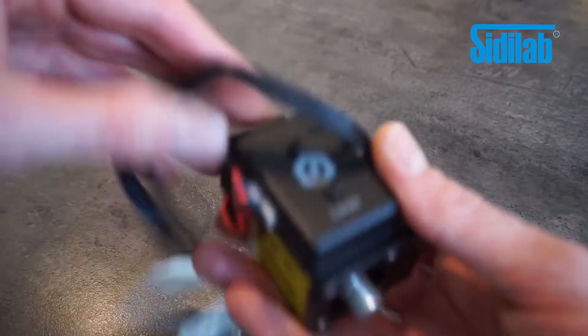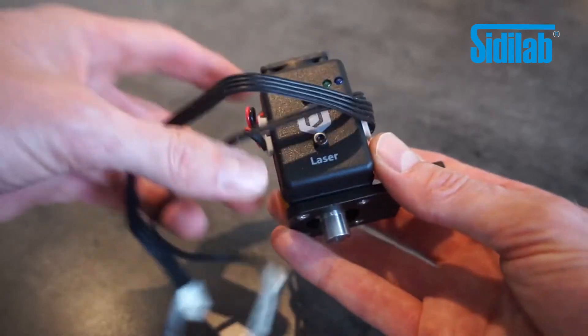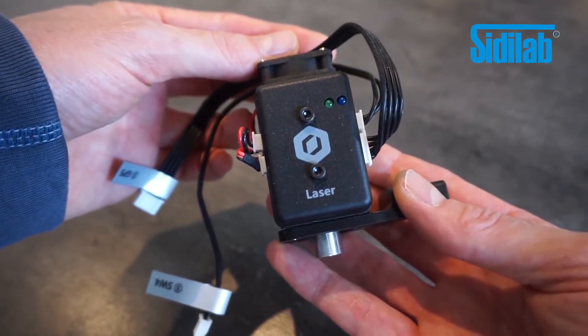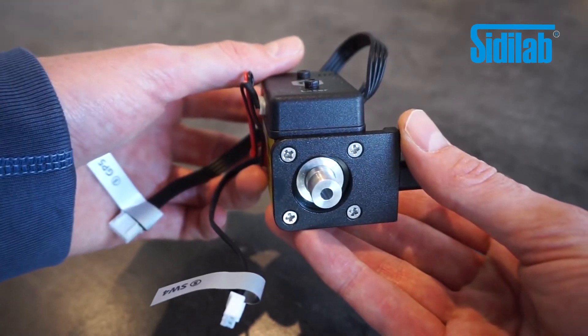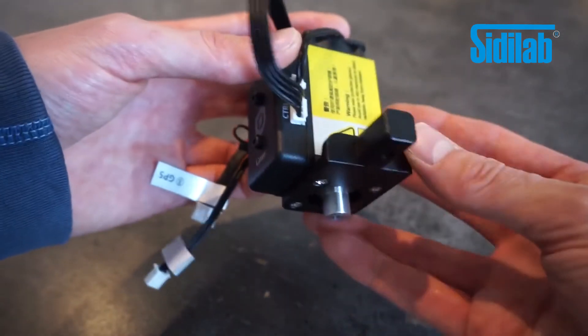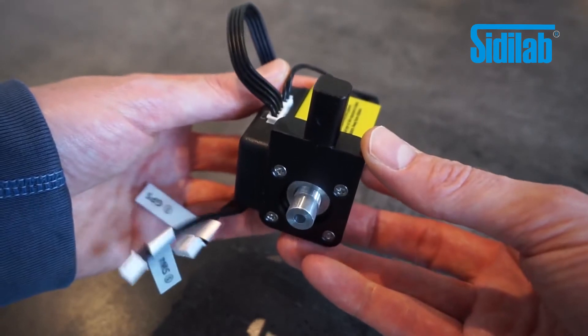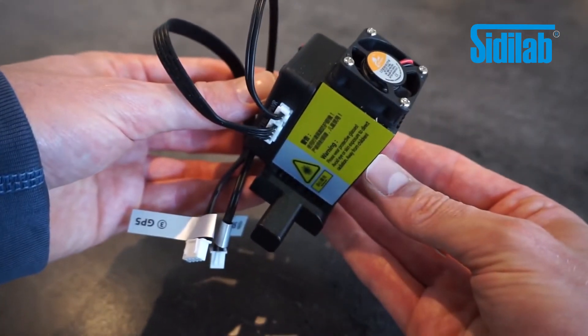The laser module that comes supplied with the Dubot can be used for engraving paper, wood or similar materials. This is only a 500 milliwatt unit so cutting materials and engraving metals is not possible. The unit is nicely constructed and has a fan for cooling the laser during operation.